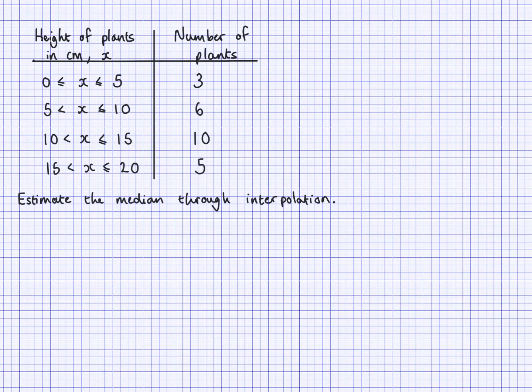I have a grouped frequency table here, and what I've got here is continuous data in centimetres, so values between 0 and 5, 5 and 10, 10 and 15, 15 and 20. And I've got the frequencies here as well, so I've got 3, 6, 10 and 5.